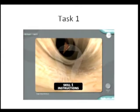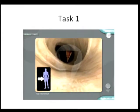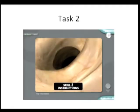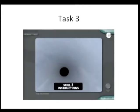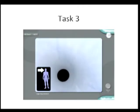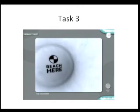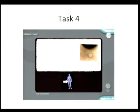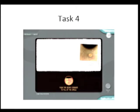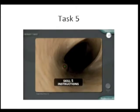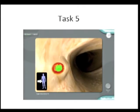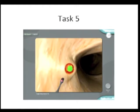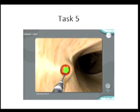Task one essentially asks the test taker to line up the shadow with the target in the lumen. Task two is a loop reduction task. Task three asks people to identify and fix targets in the retroflexed position. Task four starts at the end of a simulated colon and asks participants to identify small targets hidden behind folds. The last task is a targeting task where an instrument comes out of the channel of the endoscope, and people have to target it in the middle of a green area and hold it there for a period of time.